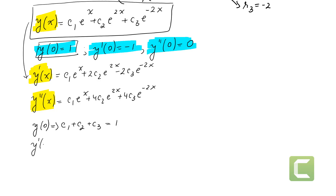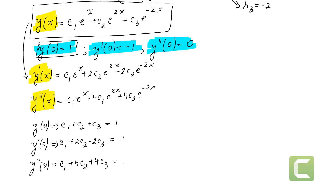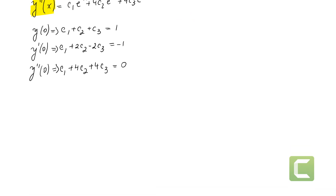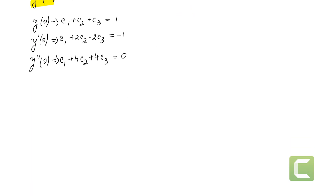y′(0) equals c1 plus 2c2 minus 2c3, and this is given to be equal to negative 1. And y″(0) equals c1 plus 4c2 plus 4c3, and this equals 0. So we have to solve this system of three equations with three unknowns.